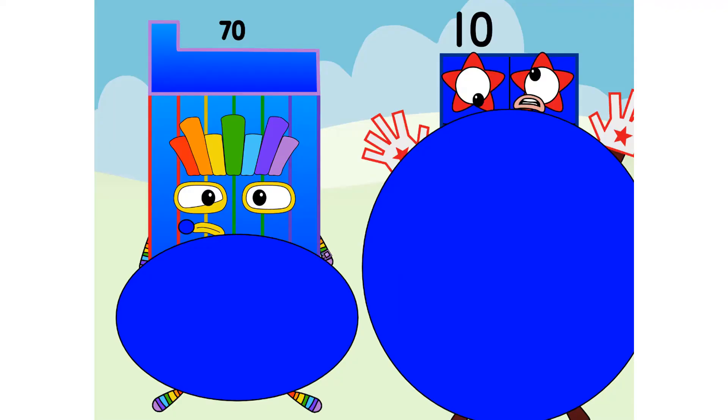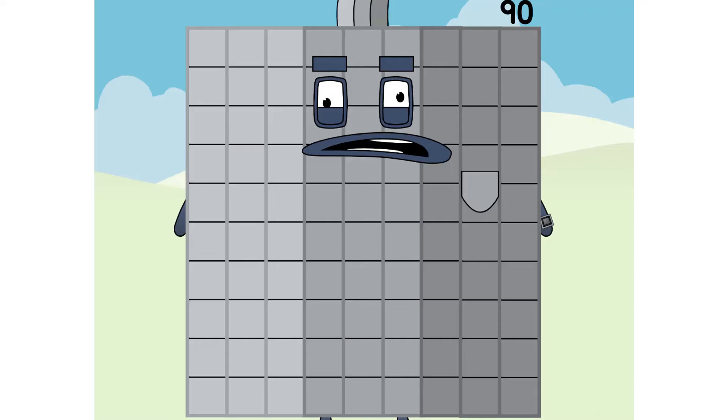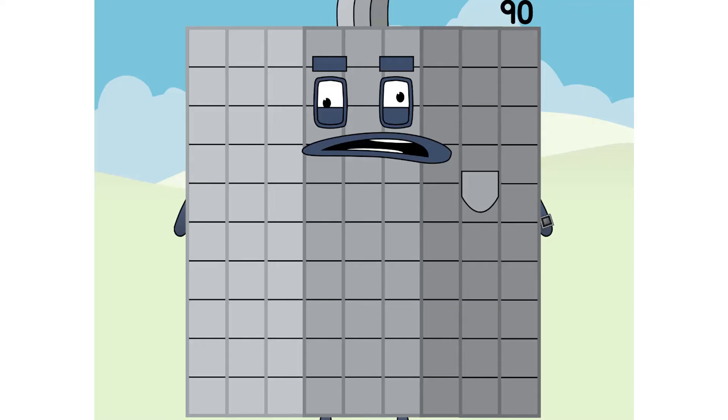Yeah, 70. That's unlucky. 10 and 70 are blueberries. How many times you have to make number blocks inflation? How many times.